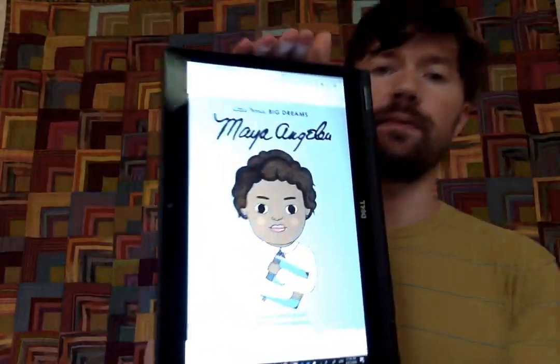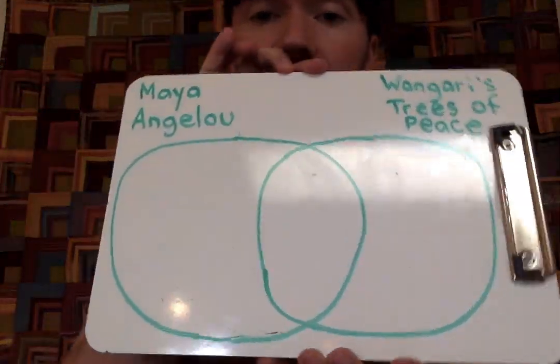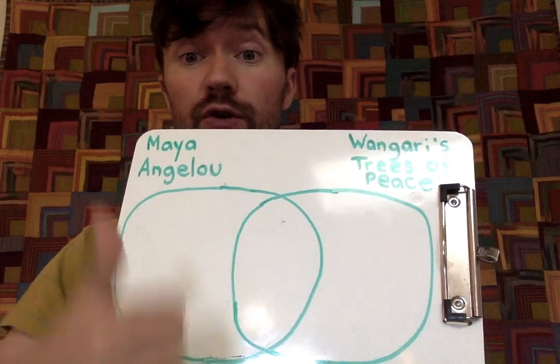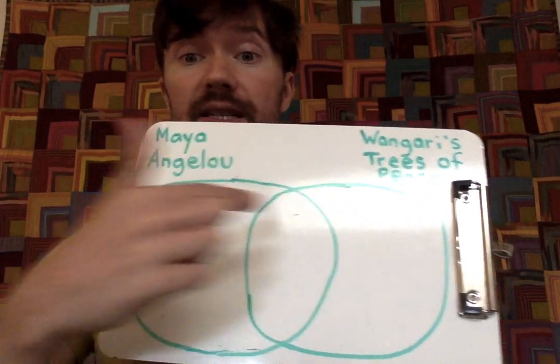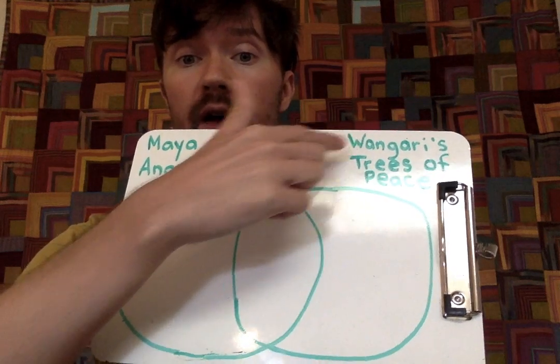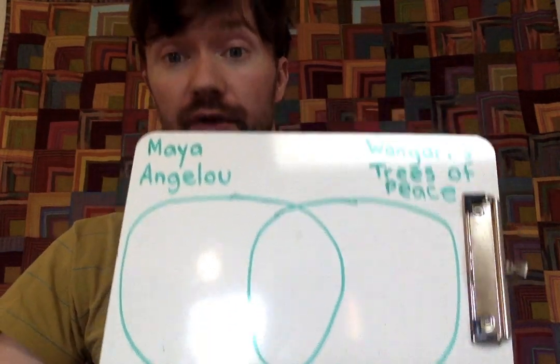The last thing we're going to do today is continue to work with Venn diagrams, which we've been working on this week. Venn diagrams require us to compare one text with another text, so we're thinking about text-to-text connections — ways in which stories are connected to each other and ways in which stories might be different. As I was reading, Wangari's Trees of Peace really made me think of the book Maya Angelou, which we'd also read in class. So I set my Venn diagram up with two big overlapping circles that create three spaces: one for Maya Angelou, one for Wangari's Trees of Peace, and one space in the middle for things that are true about both books.